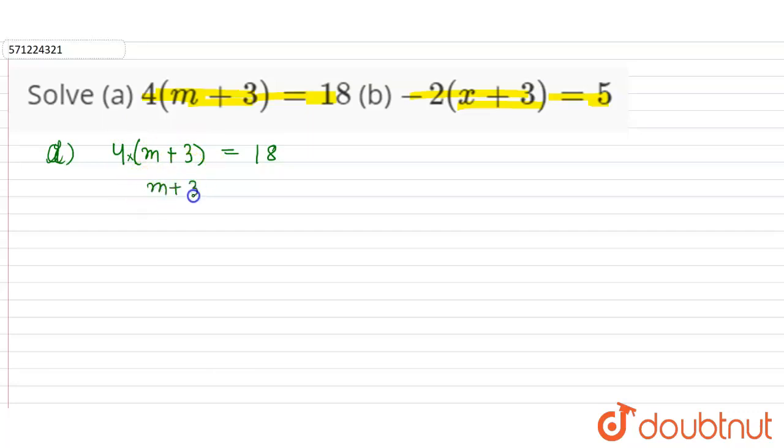So m plus 3 will be equal to 18 divided by 4. Because here the 4 is in multiplication, so when we transfer the multiplication term on the right hand side, on the other side, it will be divided.